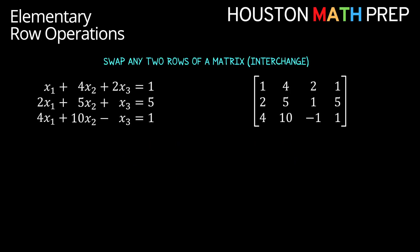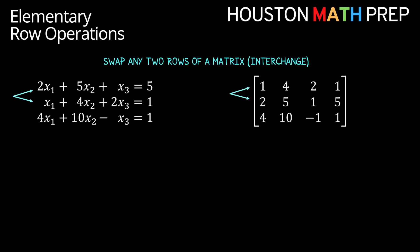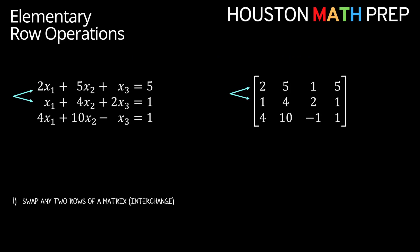The first operation is swapping two rows of a matrix. If you think about a system of linear equations like the one on the left here, it should not affect the solution to our system at all if we simply list the equations in a different order. So changing the order of the listed equations in the system is completely okay. Similarly, it's completely valid to interchange two rows of a matrix and this won't affect the overall solution that we get. We'll keep a running list of the elementary operations down in the left corner as we go through them.